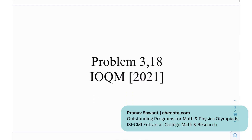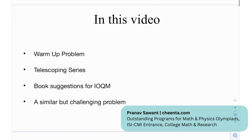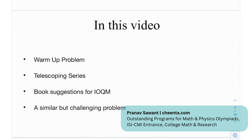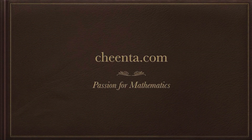We have two problems: problem 3 and problem number 18, both from IAQM 2021. In this video, we're going to be looking at a warm-up problem. The idea is to get you a little bit familiar with telescoping series and similar ideas. Then we have a pretty neat problem in telescoping series — a good demonstration of a complete problem in Olympiads. Then we have some book sessions for the IAQM and, at the end, a similar but challenging problem. This video is sponsored by Chinta.com.